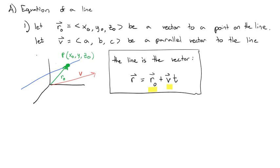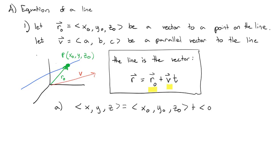Now we can break this vector out. r is the vector x, y, z, is equal to r-naught, which is x-naught, y-naught, z-naught, plus the parallel vector, which is a, b, c, times the parametric variable t. This is the vector equation of the line.